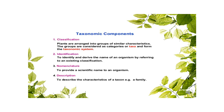Here we have the taxonomic components that we already discussed earlier in this lecture. We have four components: classification, identification, nomenclature, and description. In classification, plants are arranged into groups of similar characteristics; these groups are considered as categories or taxa, forming the taxonomic system. In identification, we identify and derive the name of an organism by referring to an existing classification. In nomenclature, we provide an appropriate scientific name to an organism. In description, we describe the characteristics of a taxon at a specific level of the taxonomical hierarchy.